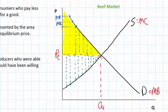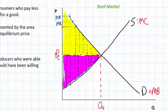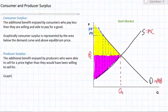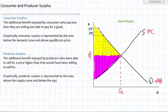I'll shade that area in purple here. The purple shaded area represents the additional benefit enjoyed by farmers and beef producers who were willing and able to sell their beef at a price lower than the equilibrium price. Graphically, producer surplus is represented by the area above the supply curve and below the equilibrium price.